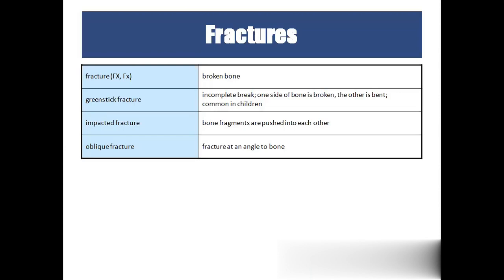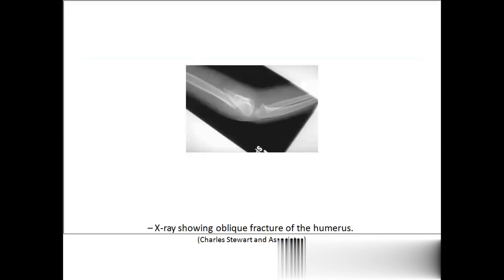FX is the abbreviation for fracture or broken bone. Greenstick fracture happens only in children — only half the bone fractures, the other half remains intact, because ossification is not yet complete in children. Impacted fracture means many bony fragments are pushed into each other. Oblique fracture has the fracture line running in an oblique direction, as seen in the picture.